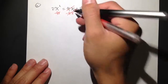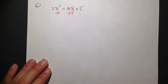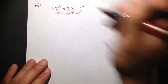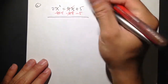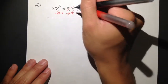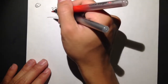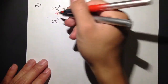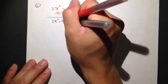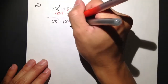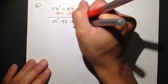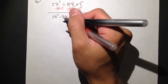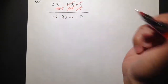Then I also subtract 5, so minus 5 on both sides. The right-hand side cancels to zero, and all I have on the left-hand side is 2x squared minus 9x minus 5 is equal to zero.